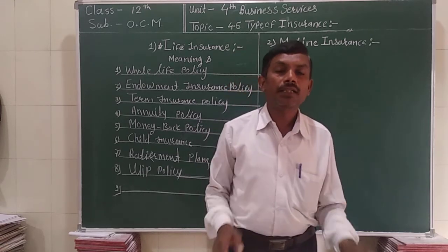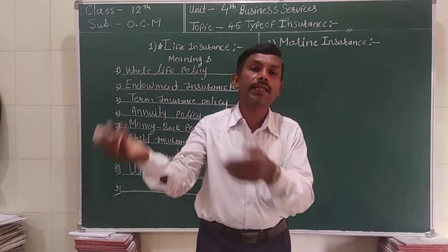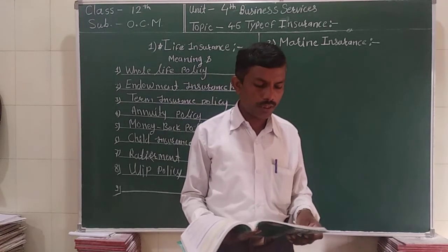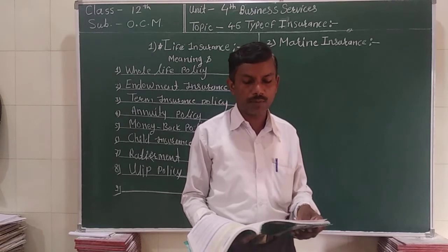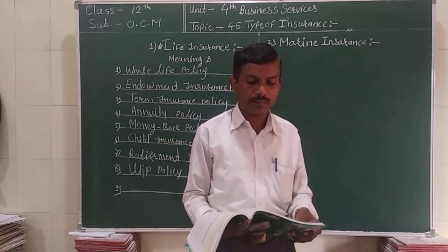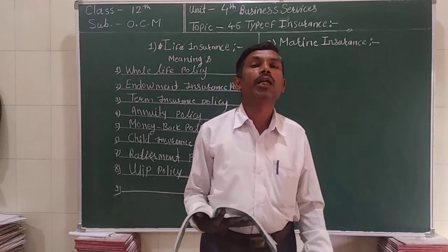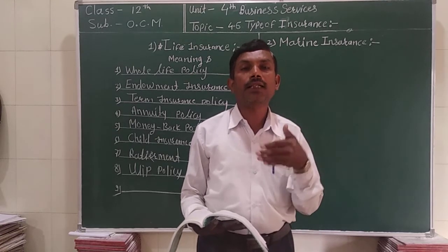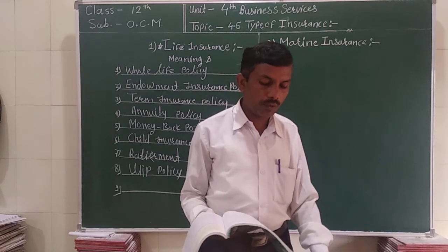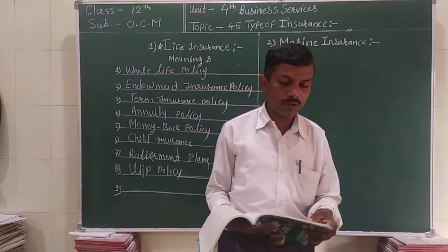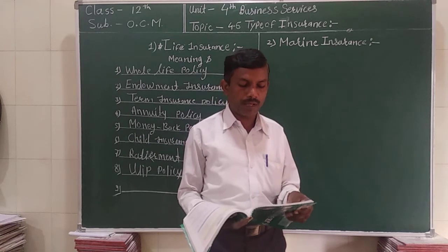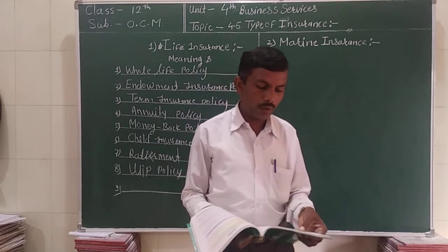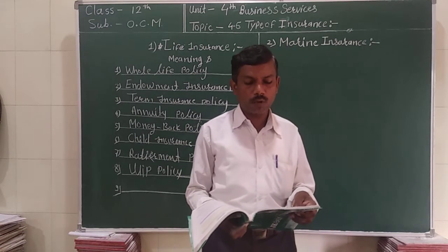The second type is endowment insurance policy. The third type is term insurance policy, which is insurance taken for a specific period. Term insurance policy has the lowest premium among all insurance policies.